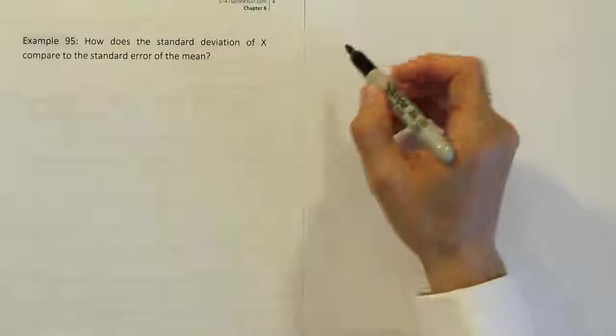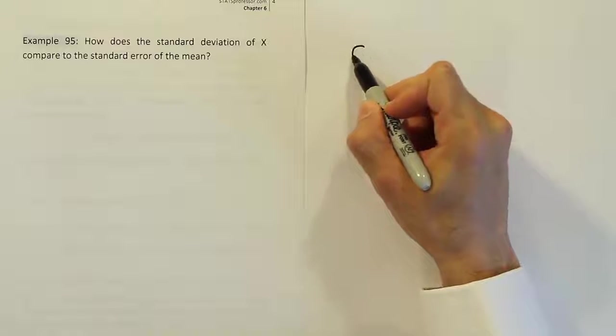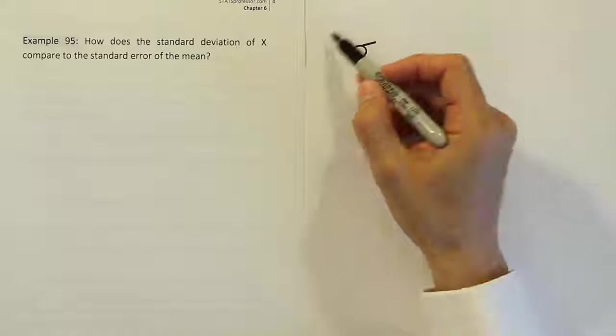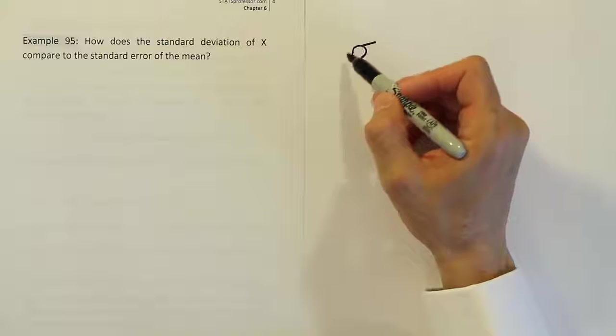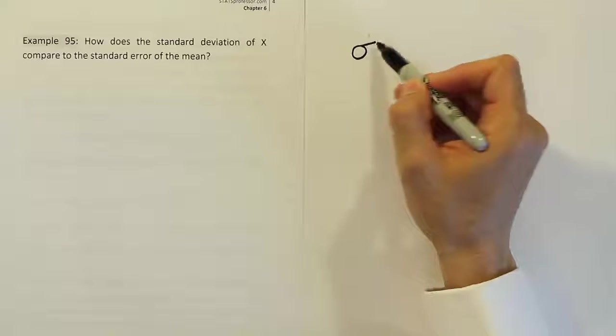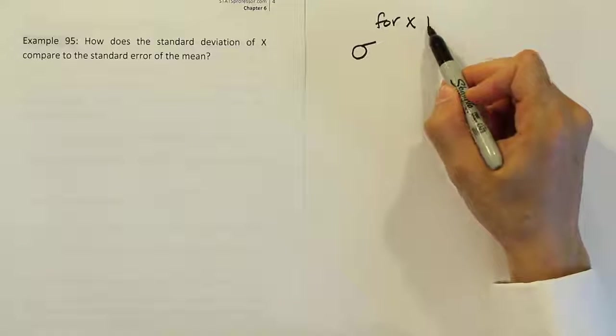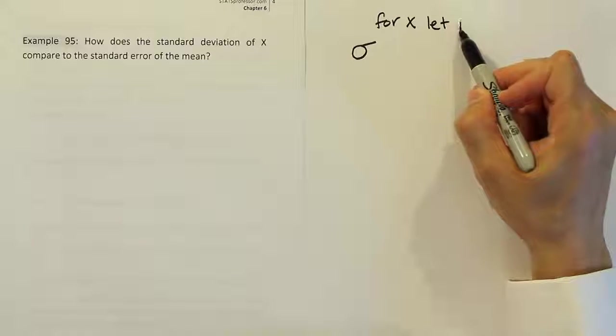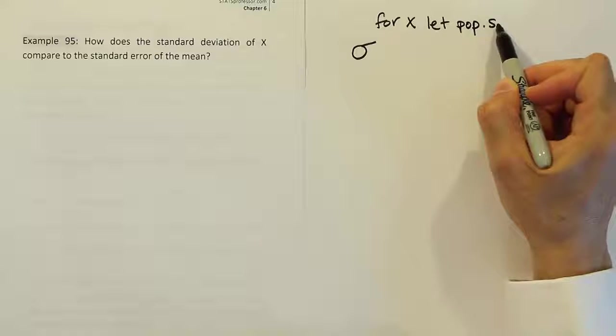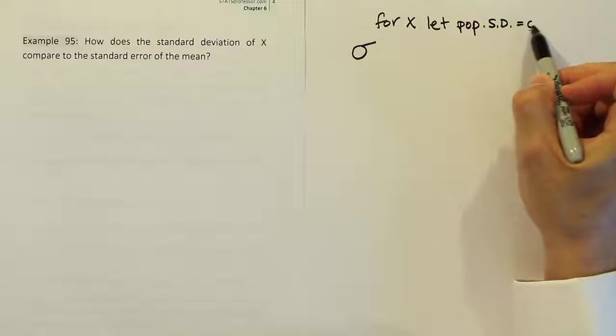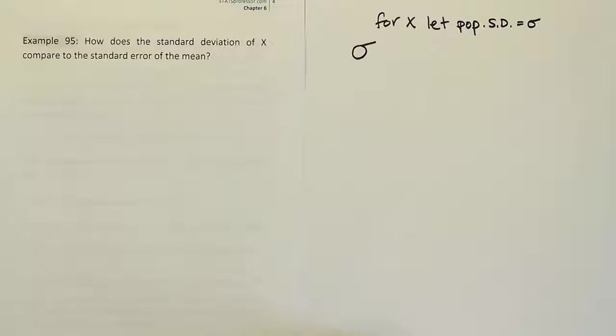Let's talk about that and see what the answer is. You know that for a particular value, say you have a distribution where the standard deviation is σ, so let's say for x let the population standard deviation be equal to σ.